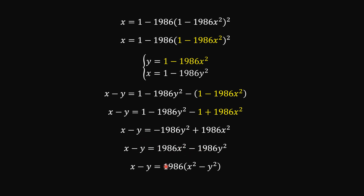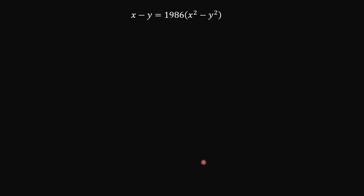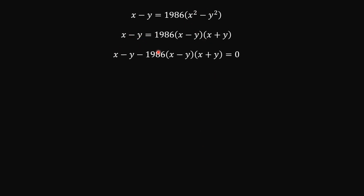Factoring out 1986, we have x squared minus y squared, which is perfectly good for the solution of this problem. So now from here, we have this, because this is a difference of two squares. And then I'm going to send everything to the left side, and then we have this.